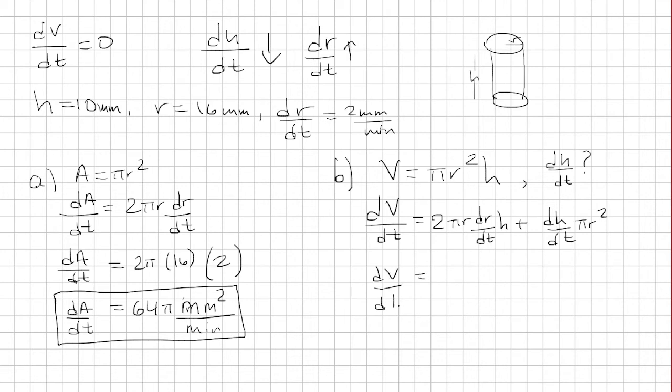Now we just plug in what we know. Actually, we said in the beginning that the derivative of the volume with respect to time is 0, since the volume was a constant.